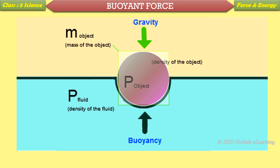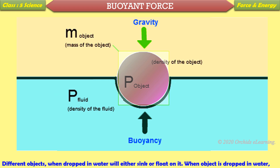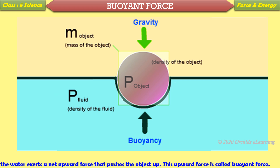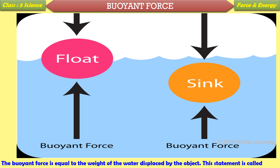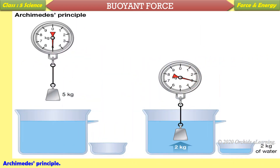Buoyant force: Different objects when dropped in water will either sink or float. When an object is dropped in water, the water exerts a net upward force that pushes the object up. This upward force is called the buoyant force. The buoyant force is equal to the weight of the water displaced by the object. This statement is called Archimedes' Principle.